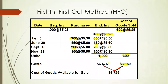The ending inventory is $6,575. Adding the cost of goods sold and ending inventory together gives you the total cost of goods available for sale. Under FIFO, the cost of goods sold is $3,150 and the ending inventory is $6,575.